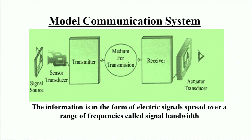Let us have a look at a model communication system. Initially, we have a signal source. The information from the signal source is passed on to the sensor transducer. From the sensor transducer, the transmitter picks up the signal and transmits it via a medium to the receiver. The receiver then passes on that information to the actuator transducer and it is received at the other end. The information being sent is in the form of electric signals spread over a range of frequencies called the signal bandwidth.